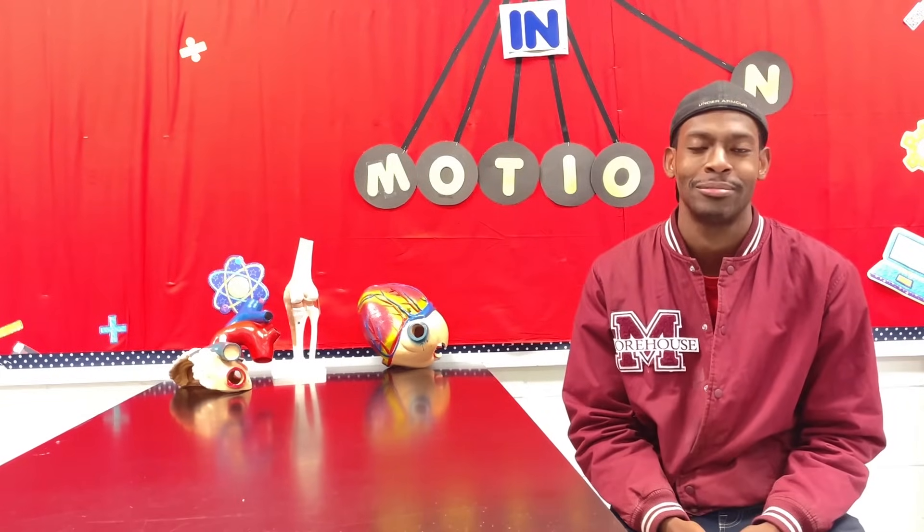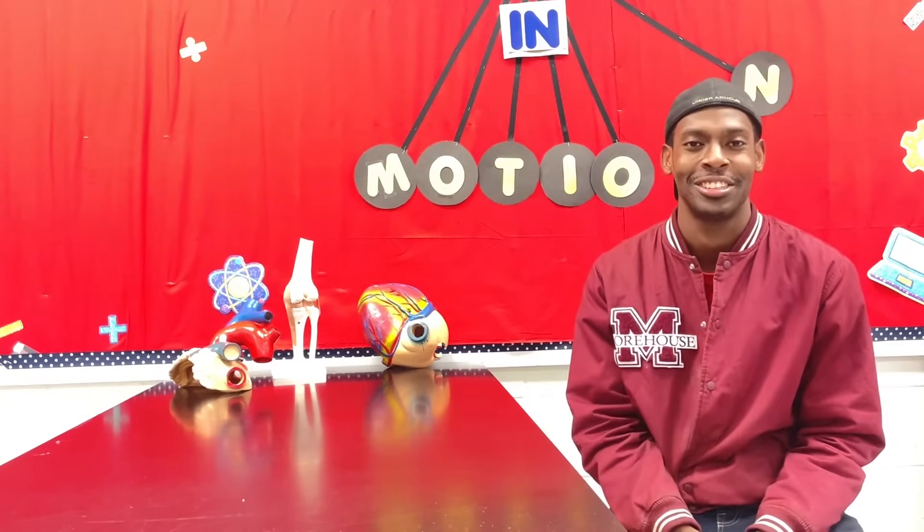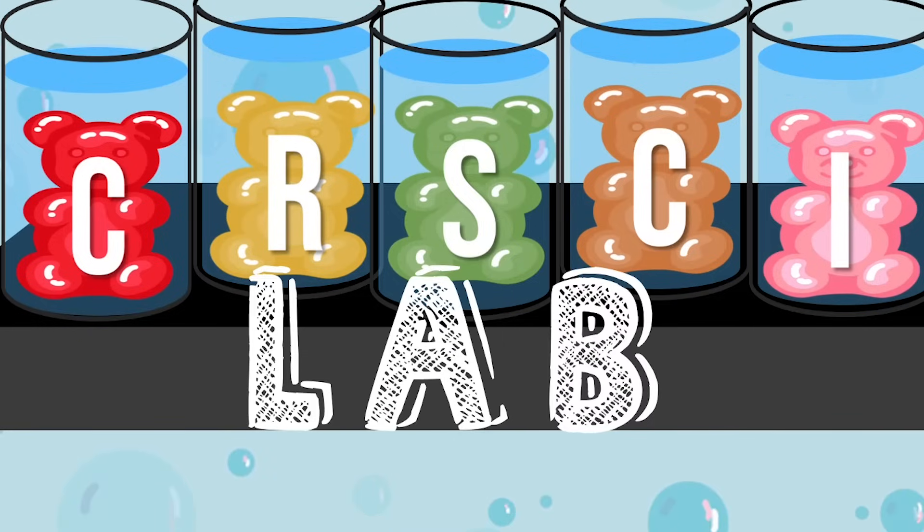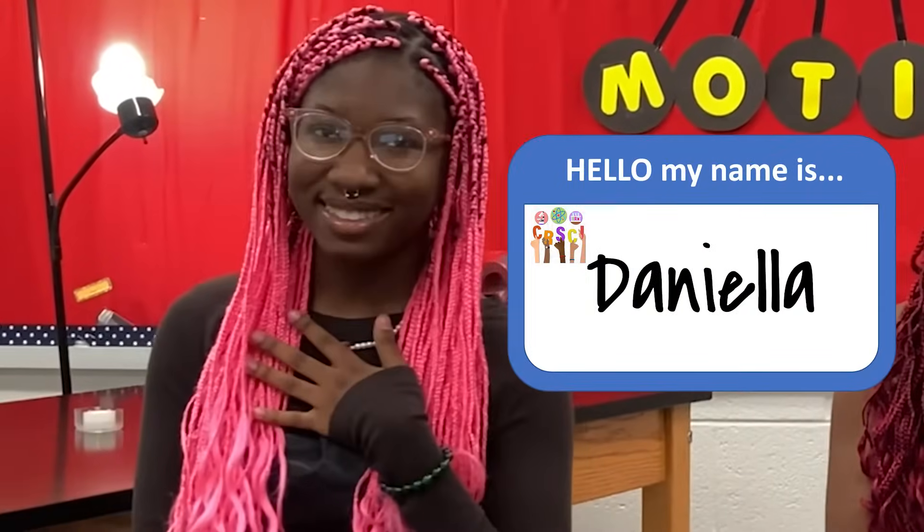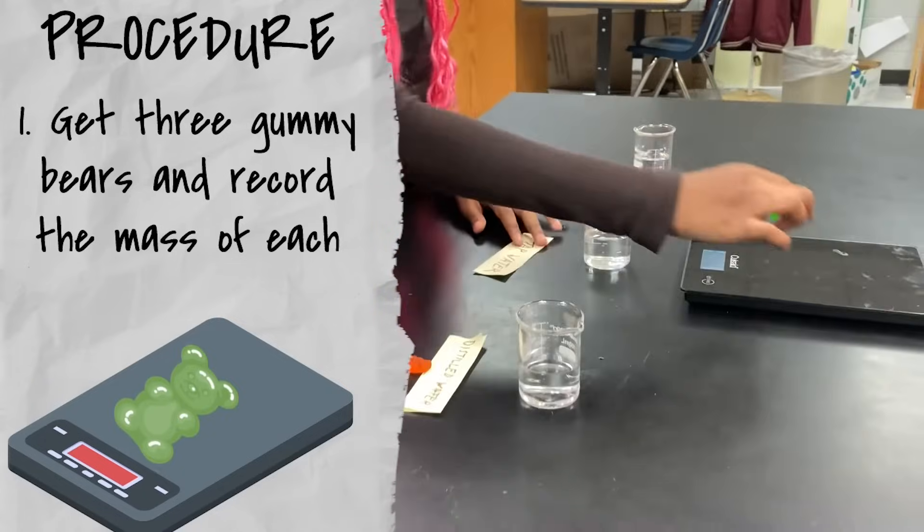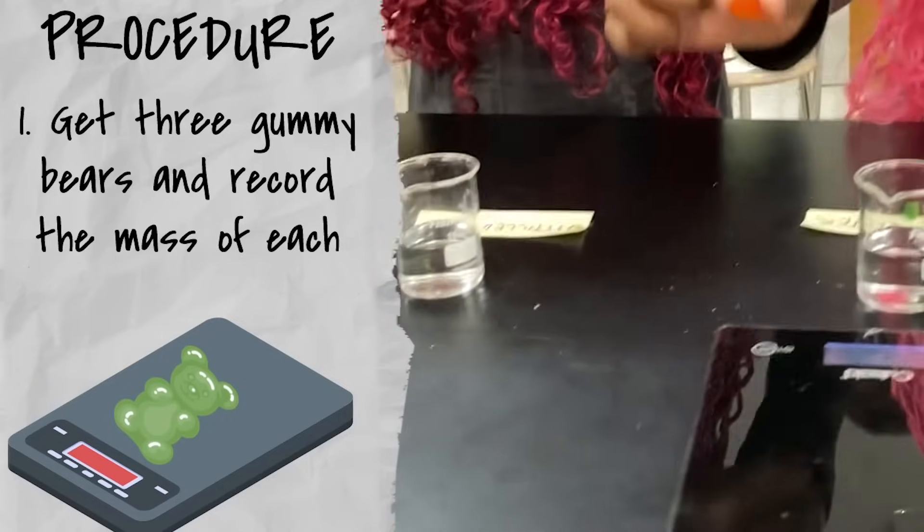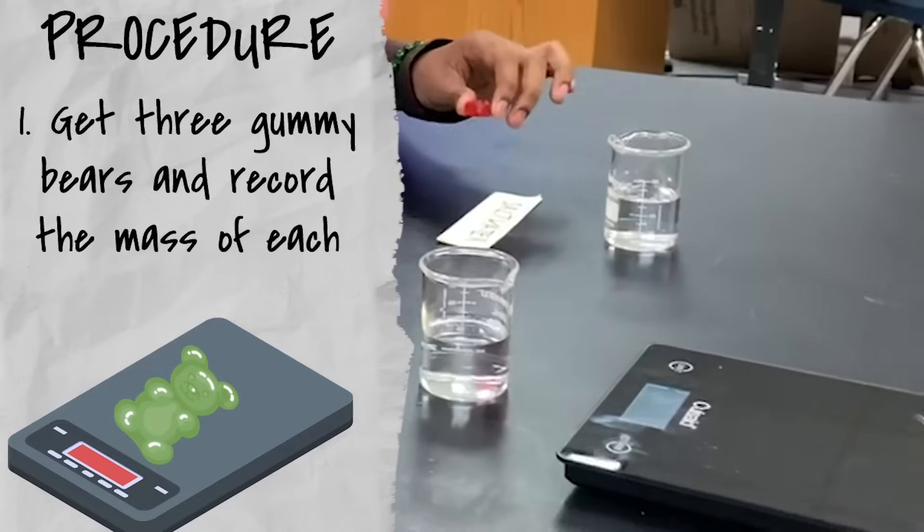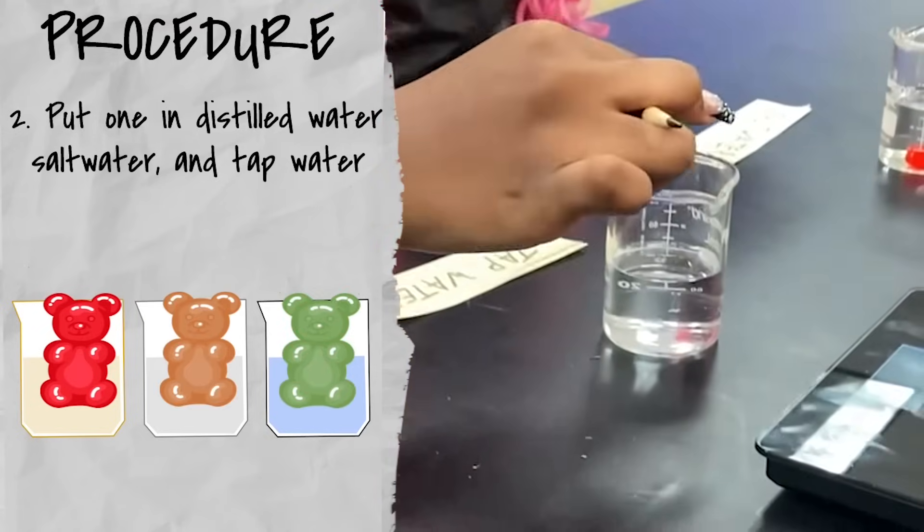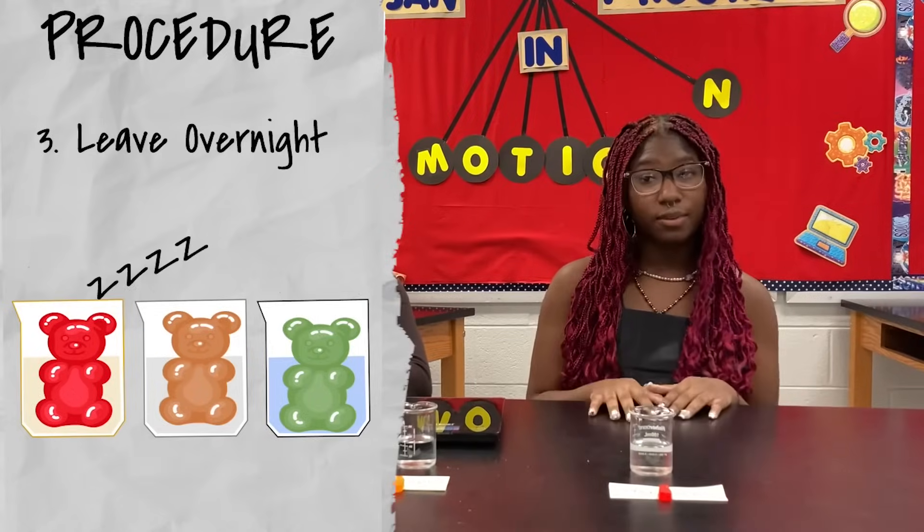But what does this all have to do with homeostasis? Let's see. Okay, that one wasn't me. Hi, I'm Danielle. Hi, I'm Daniella. So here we have three gummy bears. Let's take the masses, and if you don't have a scale, we can just make some general observations. We're going to put one in salt water, the other one in distilled water, and the last one in regular old tap water, and let's leave them overnight. 24 hours later...